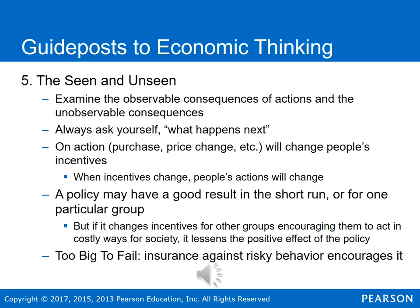The next idea is the seen versus the unseen. Economics examines both the observable and the unseen consequences of actions. When doing this analysis, always ask: what happens next? One action, purchase, or price change will change people's incentives, and when incentives change, people's actions tend to change. A particular policy may have a good result in the short run for one group, but if it changes incentives for other groups and encourages costly behavior, it will lessen the positive effect or even be a net negative.